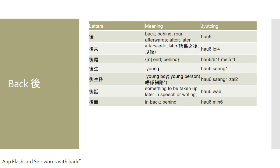The second character I want to talk about is 喊, and this character means back, behind, rear, afterwards, after, or later. For example, when people are parking or trying to rear into a parking spot, sometimes in Cantonese you would say 喊, 喊, 喊 — so this character can be used in that instance.